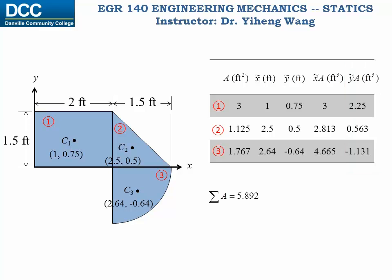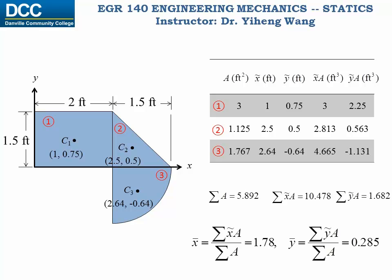Add the term A together to get the total area, and also add the term x-tilde times A, and y-tilde times A together. And then, plug them into the equations, and calculate the coordinates of the centroid for the composite area, x-bar and y-bar.